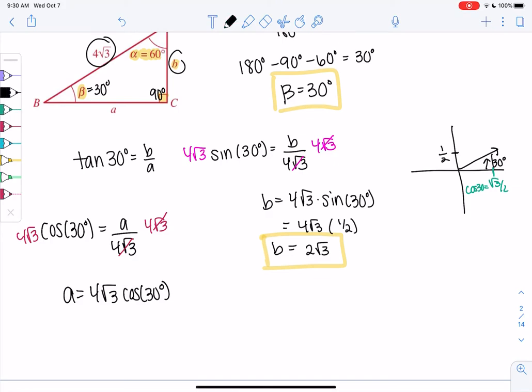So we get 4 root 3 times root 3 over 2, which brings us to 4 and 2 cancel to give me 2. Root 3 and root 3 become 3. So we get 6. So A is 6. And we've solved the right triangle.